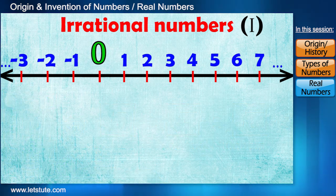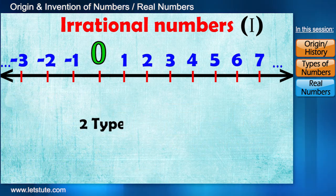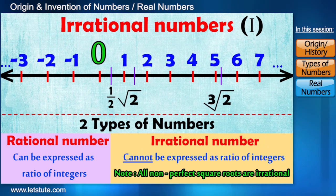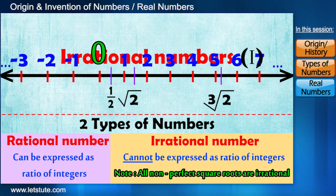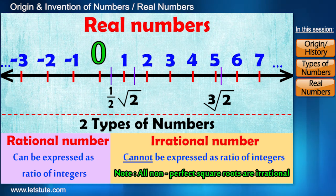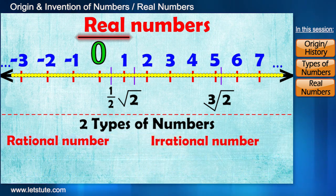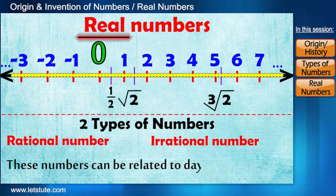Therefore we conclude that on this line we have only two types of numbers: rational and irrational numbers, and these are together called real numbers. So every point on this line is a real number. Now they are called real because we can relate these numbers to our day-to-day life.